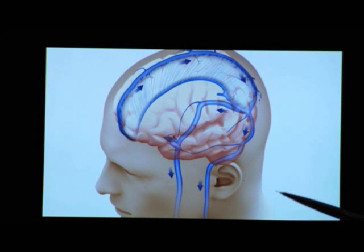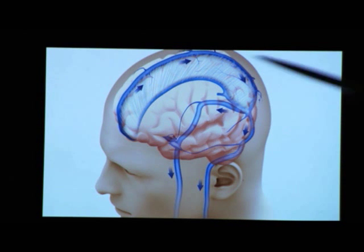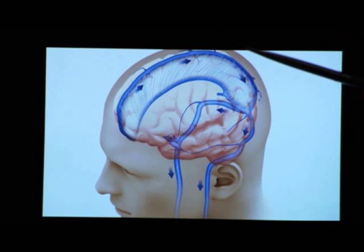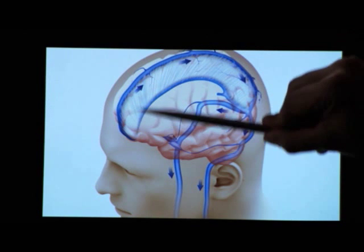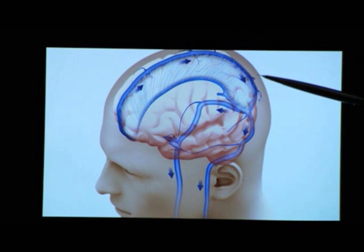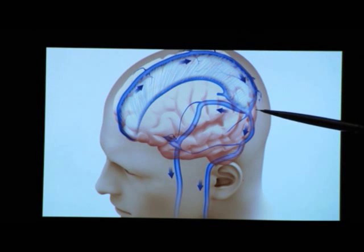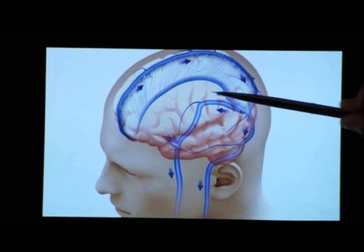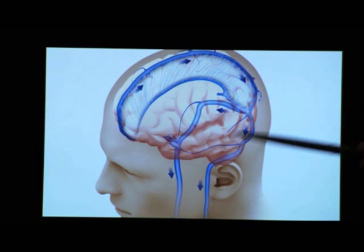This diagram here represents the normal venous drainage in the brain. Eventually there's a large vein that forms in the upper part of the head, goes posteriorly, and divides into two large veins that eventually drain into the neck.